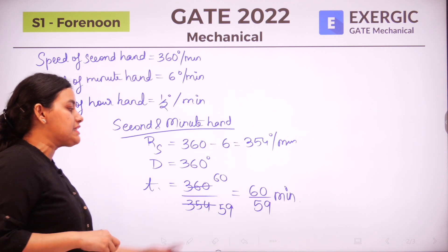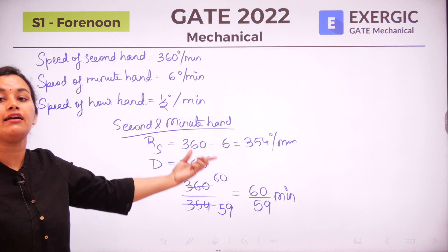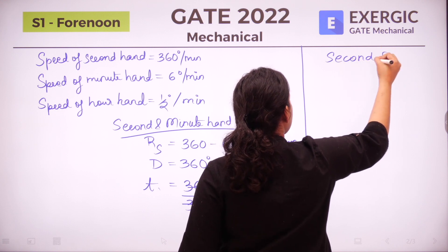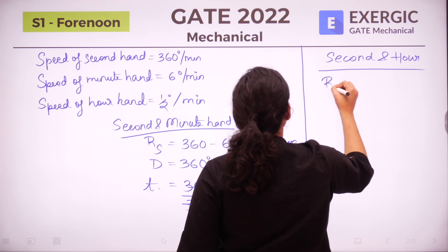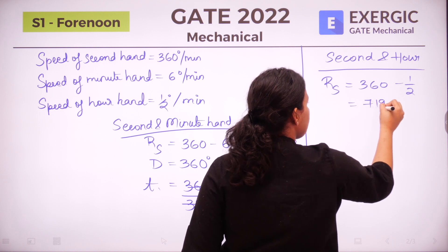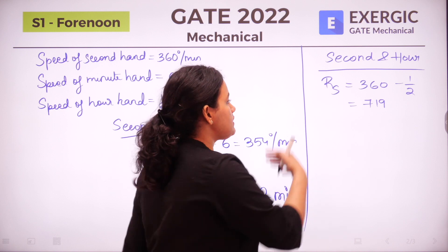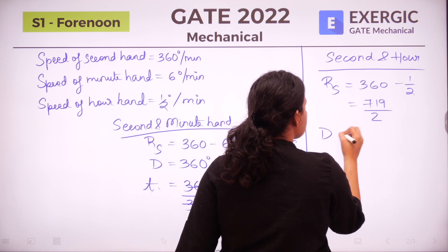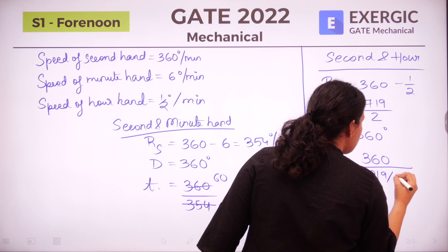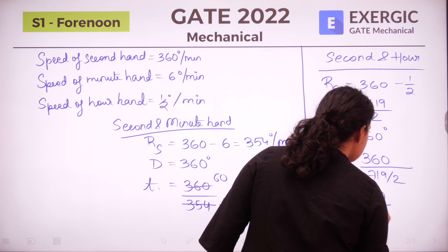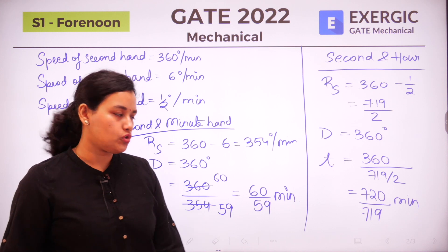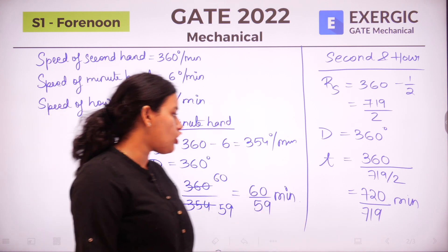Similarly for the second hand and hour hand: relative speed = 360 minus 0.5 = 719/2 degrees per minute. Time = 360 divided by 719/2 = 720/719 minutes. We cannot simplify further because 719 is a prime number. So the second hand and hour hand meet every 720/719 minutes.